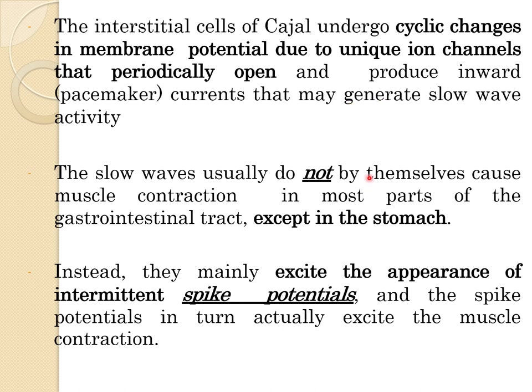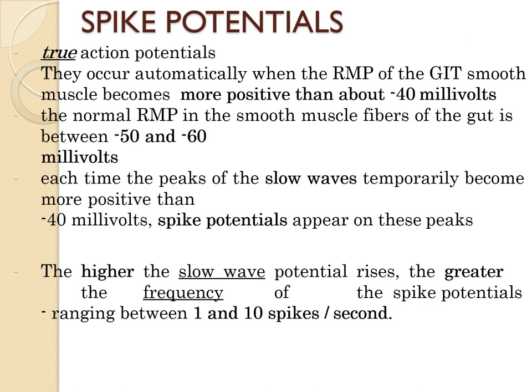The interstitial cells of Cajal undergo cyclical changes in membrane potential due to unique ion channels that periodically open and produce inward current, generating slow wave activity. The slow waves usually do not by themselves cause muscle contraction in most parts of the GI tract, except in the stomach. Instead, they mainly excite the appearance of intermittent spike potentials, which in turn actually excite the muscle contraction. Spike potentials occur automatically when the resting membrane potential becomes more positive than about minus 40 millivolts.